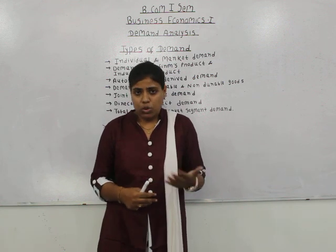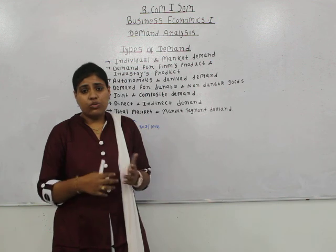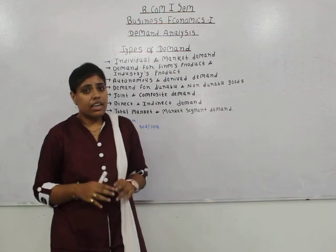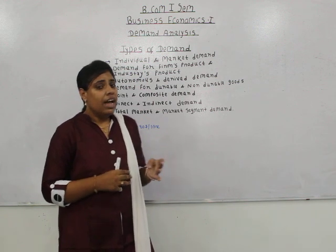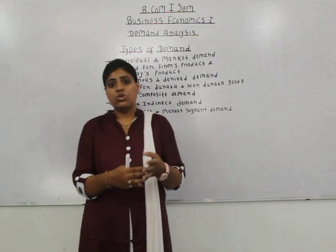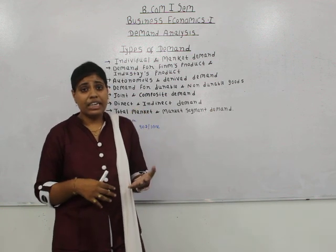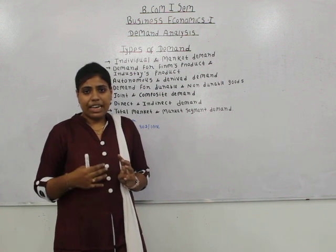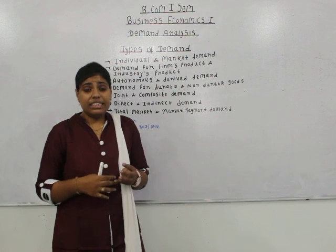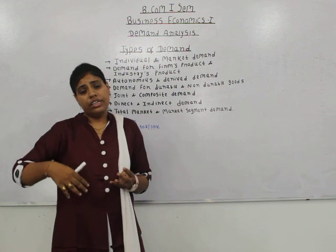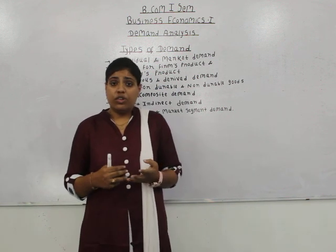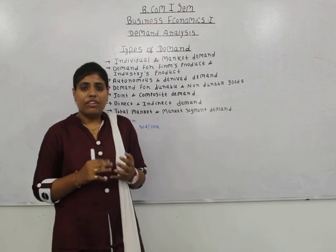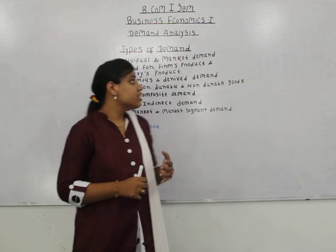The last type is demand for durable and non-durable goods. Durable goods are those which can be used repeatedly over a longer period of time, like furniture and clothes — they are not exhausted in a single use. Demand for such goods is durable demand. Non-durable or perishable goods are those exhausted in a single use, like food items. For instance, a pizza from Pizza Hut can be eaten only once; to eat again you must order another. Demand for such goods is called non-durable demand.